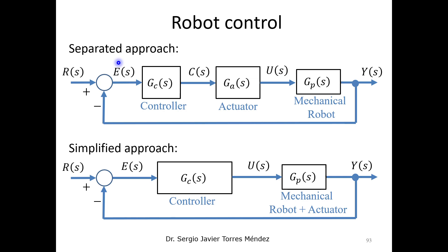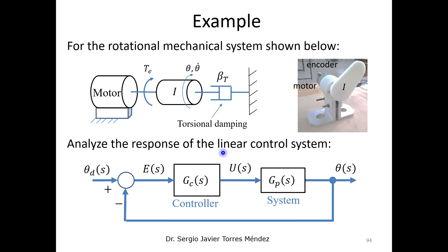In a typical robot control system we have two approaches for analyzing block diagrams. The first is a separate approach where we add an additional actuator block to be more specific about the relationships between components. The simplified approach reduces the actuator and mechanical robot into a single block. In this course we focus more on the simplified approach, avoiding the actuator model — electrical, pneumatic, or hydraulic — and focusing on the controller block combined with the mechanical part.